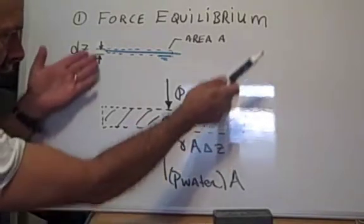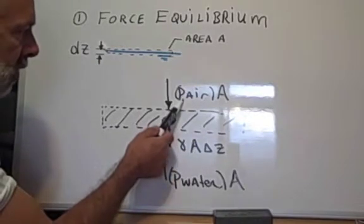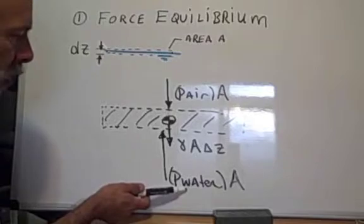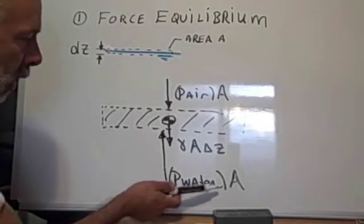On the top, the air is pushing down. The magnitude of that is the pressure times the area. And on the bottom, the water pressure is pushing up, P water times area.